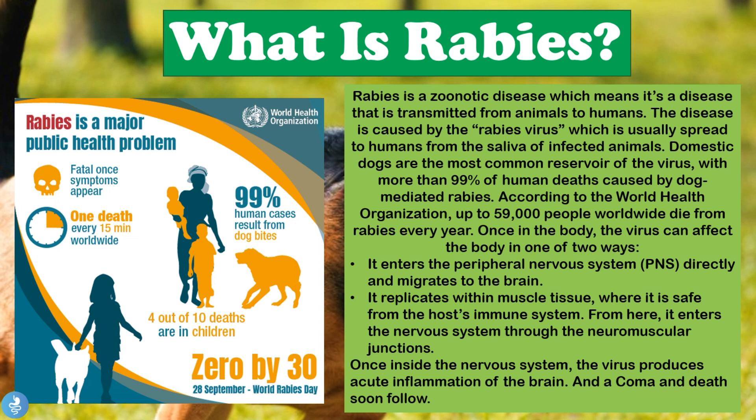The problem with the rabies virus is that once it enters the nervous system, it causes quite severe inflammation in the brain and causes the patient to go into a coma and then pass away. This is why it's given the reputation for being one of the most deadly diseases around the world and is such a major public health problem. Now that we know the basics of rabies, let's take a closer look at how one actually contracts the disease.